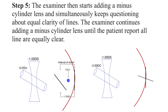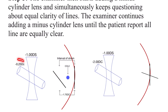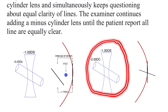Step five: the examiner starts adding a minus cylindrical lens while continuously questioning the patient about equal clarity of lines. The examiner keeps adding minus cylinder in -0.25 diopter steps. Each increment moves the foci that is in front of the retina towards the foci on the retina. This continues until the patient reports that all the lines are equally clear, giving the final power of the patient.